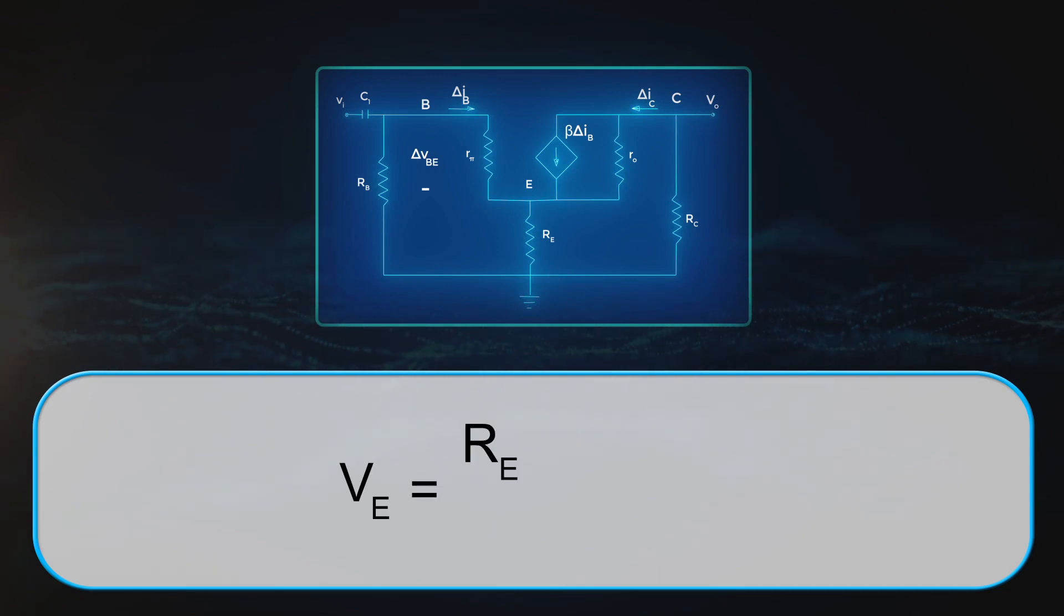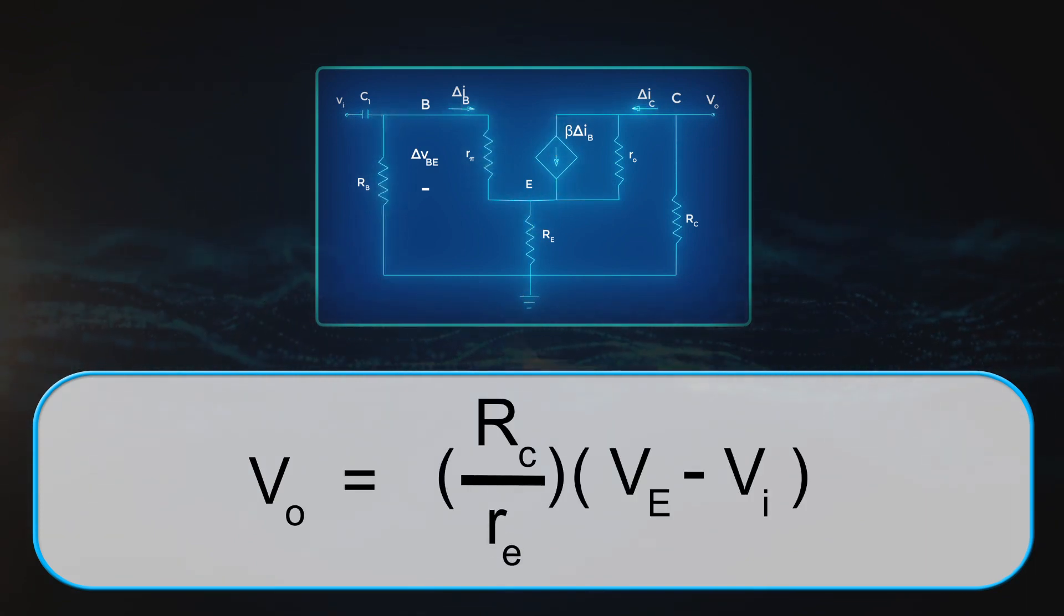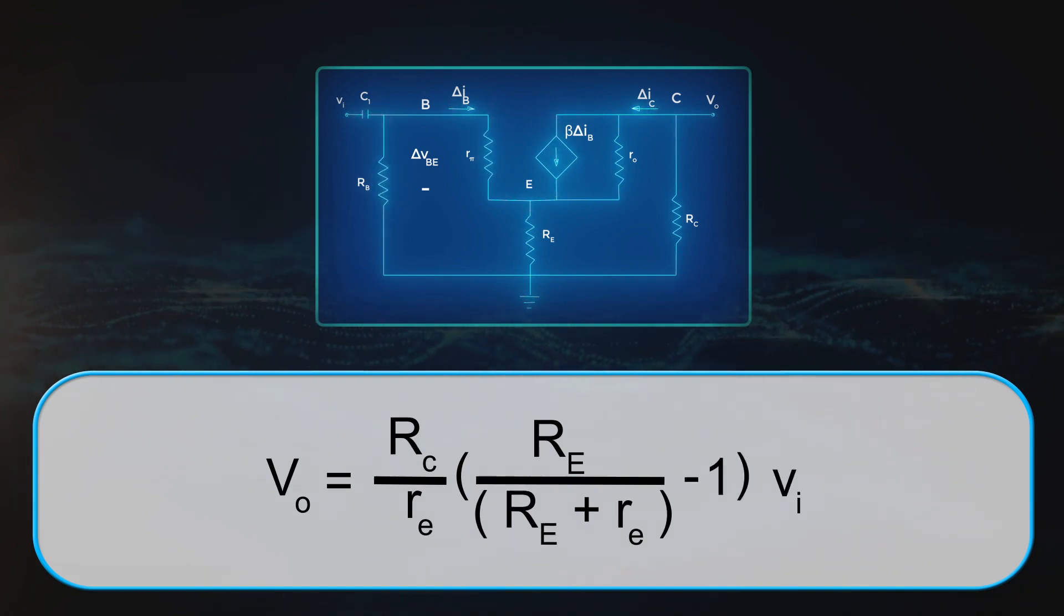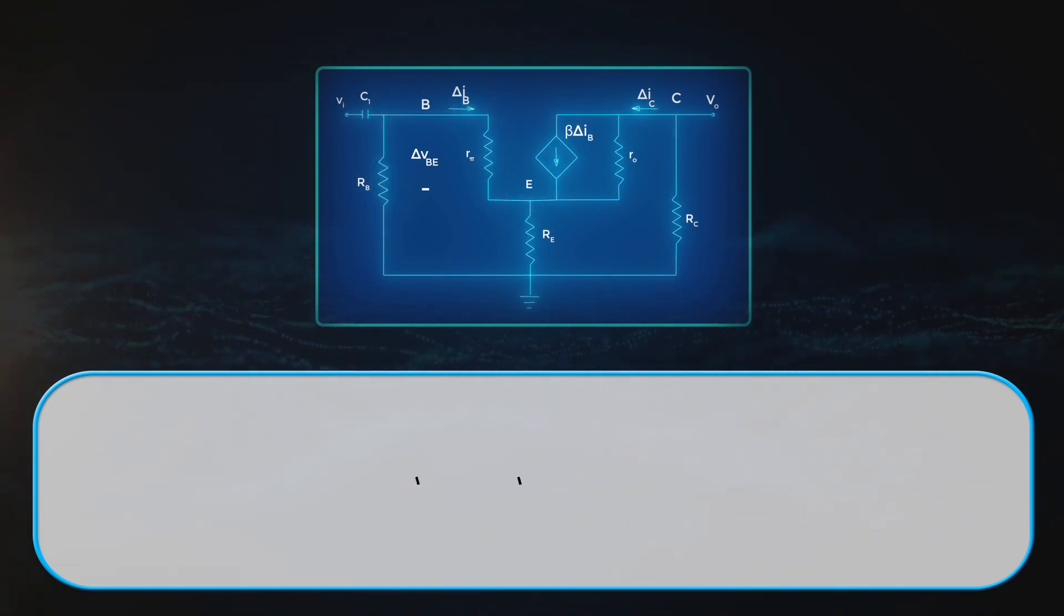VO equals to RC by RE into VE minus VI. VO equals to RC by RE into RE by RE plus RE minus 1 into VI. VO equals to minus RC by RE plus RE into VI.